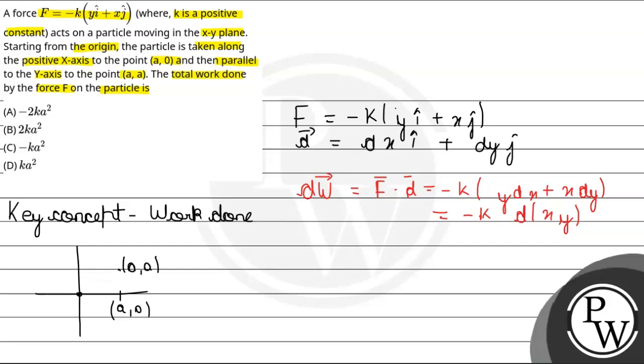Ab work done likhte hai. Work done likhne ke liye hamein kya karna hai? dw, this is equal to minus k into d of xy